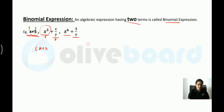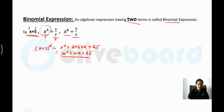Suppose I want to expand (x + 5) squared. We write it as x squared plus 2 times 5 times x plus 5 squared, which is x squared plus 10x plus 25. But if I give you (x + 5) to the power 10, you need a formula. This is what the binomial theorem provides — a generalized expression for any binomial raised to a power.